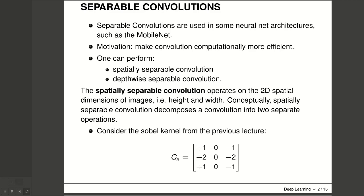Spatial separable convolution is so named because it deals primarily with the spatial dimensions of the image and kernel — the width and the height. Spatially separable convolution simply divides the kernel into two smaller kernels. For example, the Sobel kernel from the previous lecture has a kernel size of 3x3, and the idea is to separate it into a 3x1 and also a 1x3 kernel.